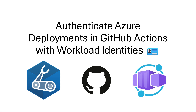To deploy our resources, we're going to need to authenticate to our Azure subscription in our GitHub Actions workflow. In order to do this, we'll need to use something called workload identities.